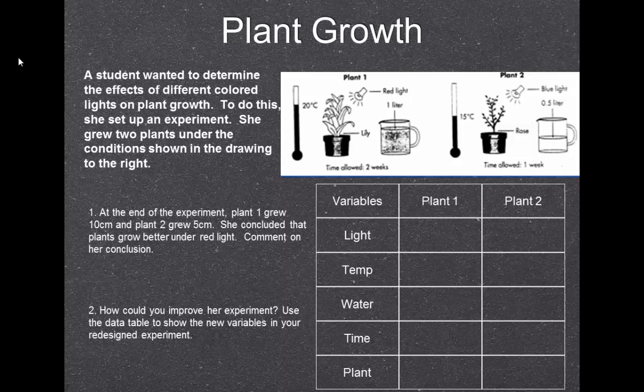Let's think about a student wanted to determine the effects of different colored lights on plant growth. So she set up an experiment. She grew two plants under the conditions that are shown over here in this diagram. This is how she set up her experiment. Two plants with all these conditions. And then, at the end of the experiment, plant number one grew 10 centimeters. Plant number two grew 5 centimeters. And so she made the conclusion that plants grow better under red light.